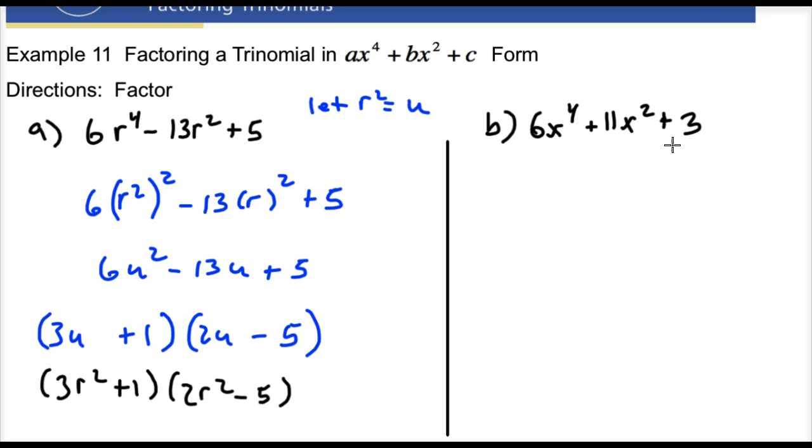Let's take a look at this guy over here now. I'm going to do the same thing. I'm going to let r squared be equal. Actually, we're going to be doing x squared now, right? We're going to be doing x squared. So we're going to let x squared be equal to u. So now this becomes 6u squared, 6u squared plus 11u plus 3.